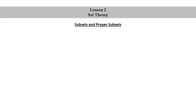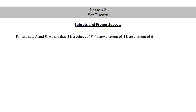Subsets and proper subsets. For two sets A and B, we say that A is a subset of B if every element of A is an element of B. We use a sideways U-shaped symbol with a line under it to represent the subset relation, so this is read as A is a subset of B.